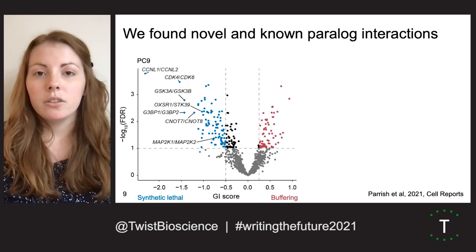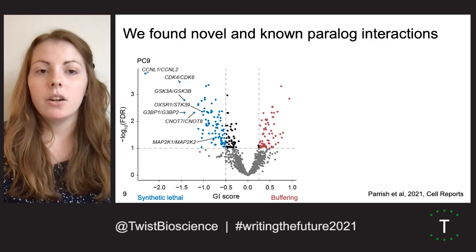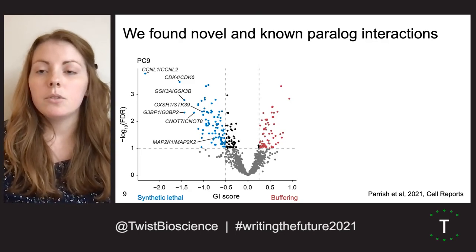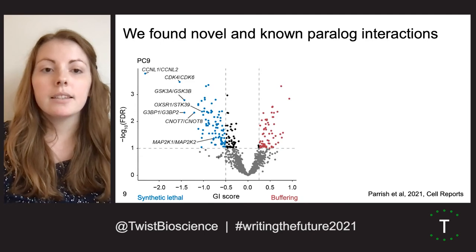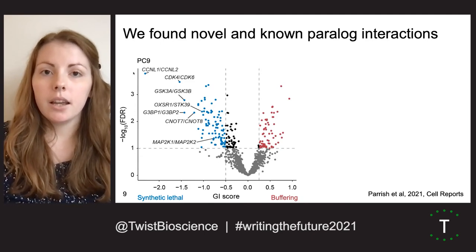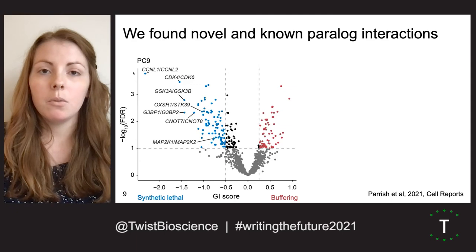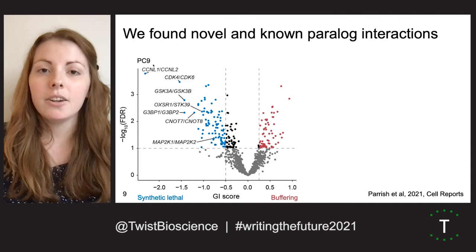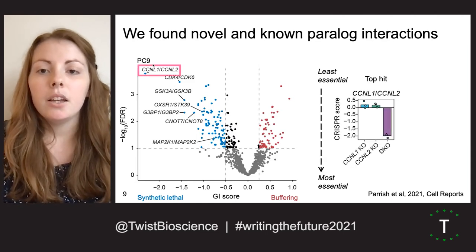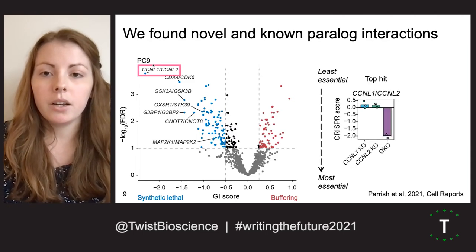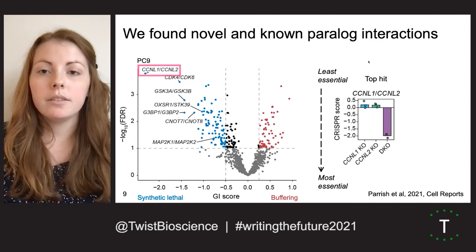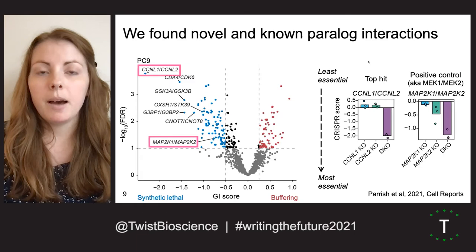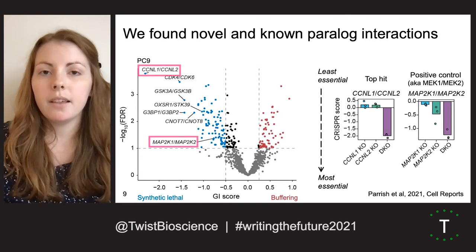Here's what the data actually looks like for all the paralog pairs in our first screen, which was done in the PC9 lung cancer cell line. The GI score is shown on the x-axis, and the y-axis is the negative log 10 of the false discovery rate, which is basically a measure of our confidence that this is a real synthetic lethal interaction — so higher is better in this case. Here's what the CRISPR score data looks like for our top pair, CCNL1 and 2, as well as a positive control, MAP2K1 and 2, which we knew would be synthetic lethal in this cell line.